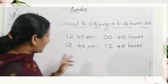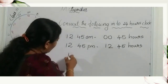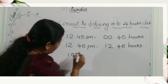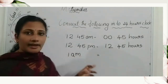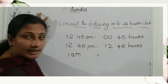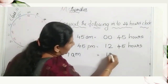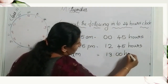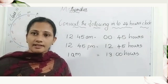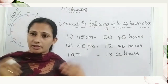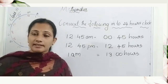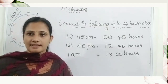Next, one a.m. — how do we convert this? You know one a.m., which is zero one hours. Now all of you understand how to convert the twelve hour clock into the twenty-four hour clock system. Very good. Let us practice more problems — then it will be very easy.